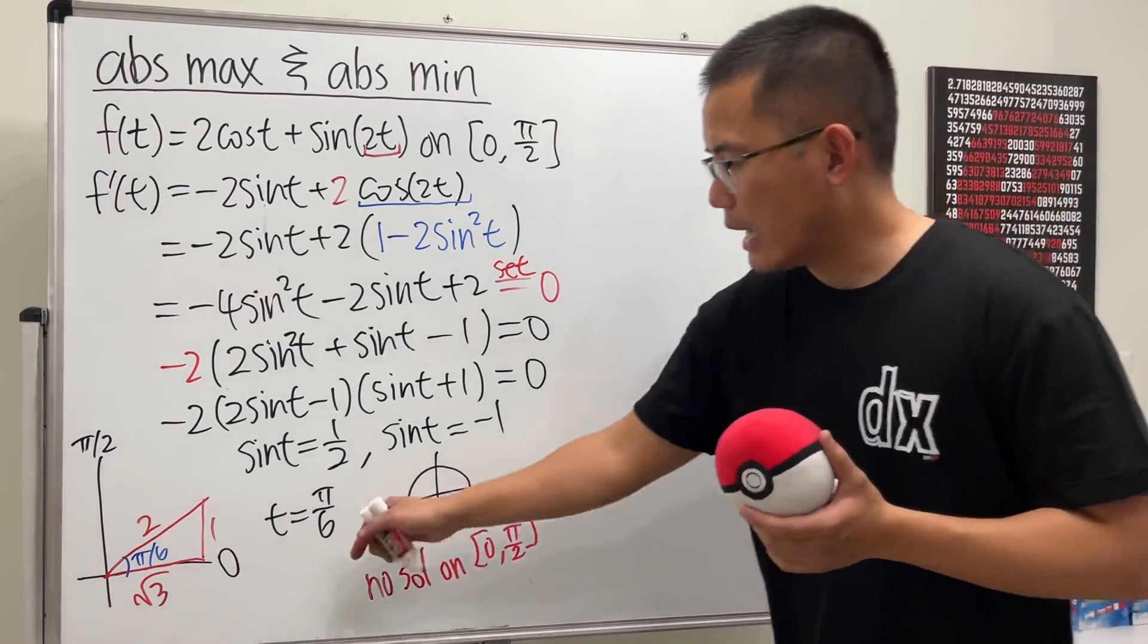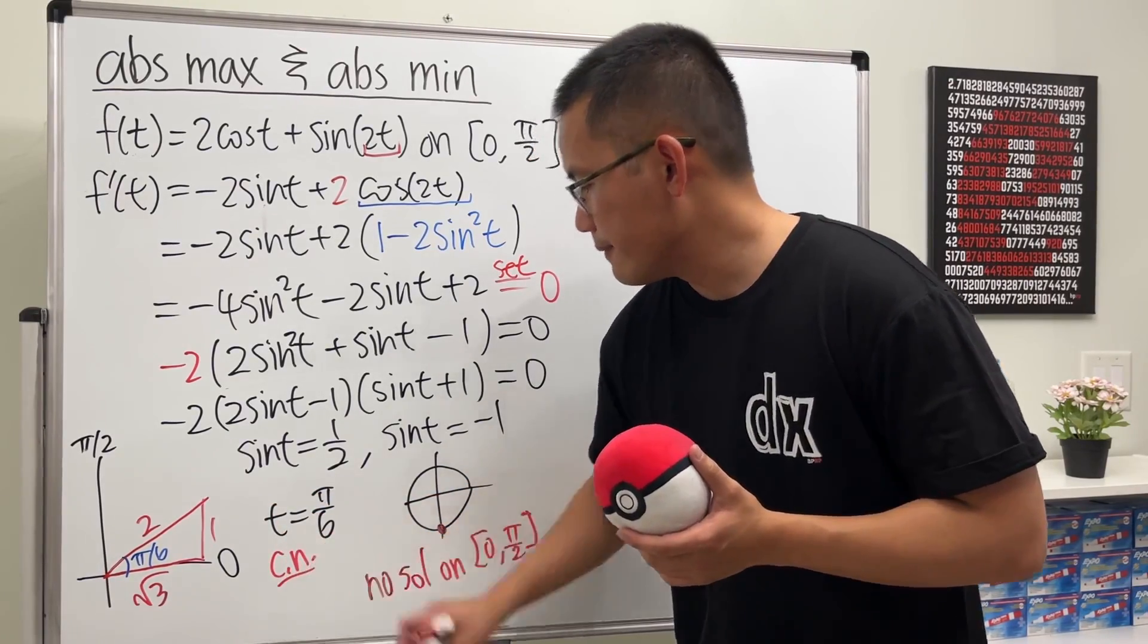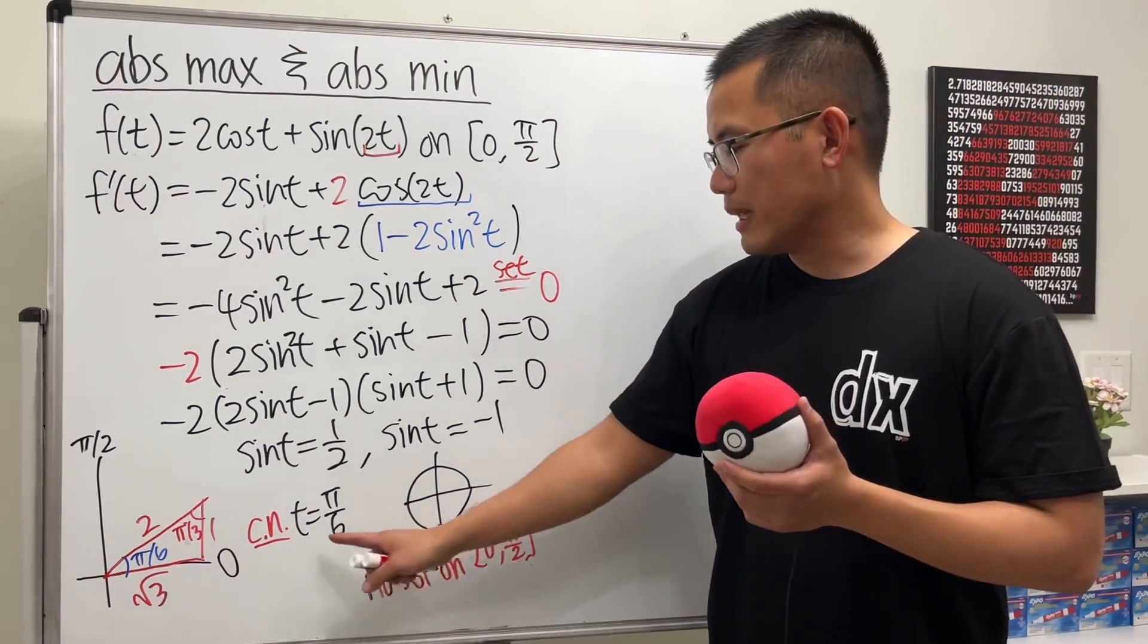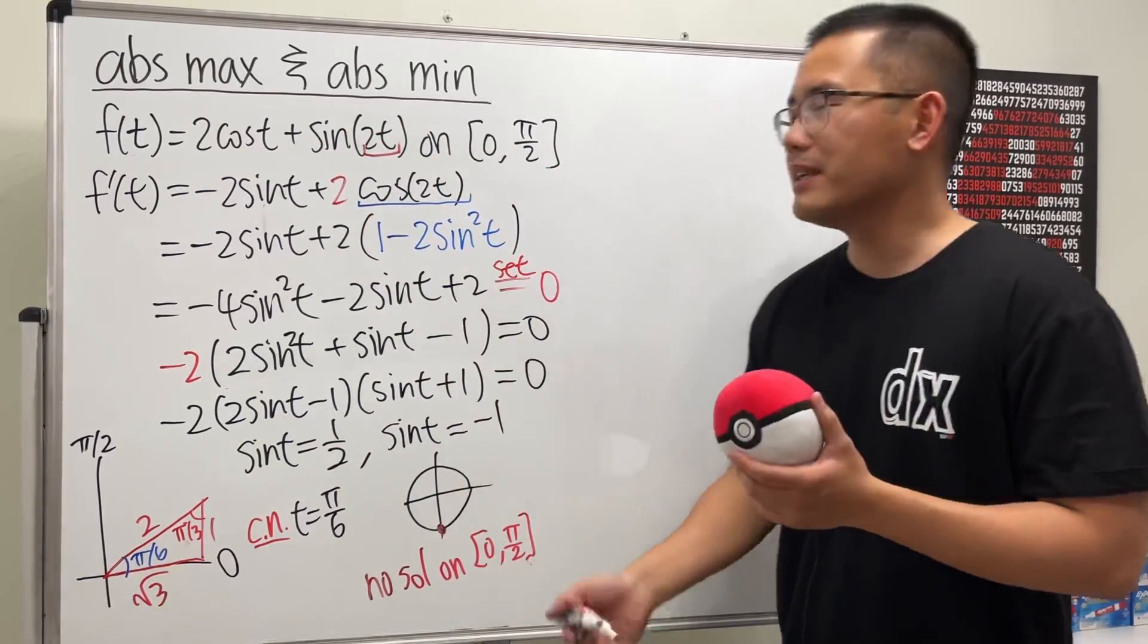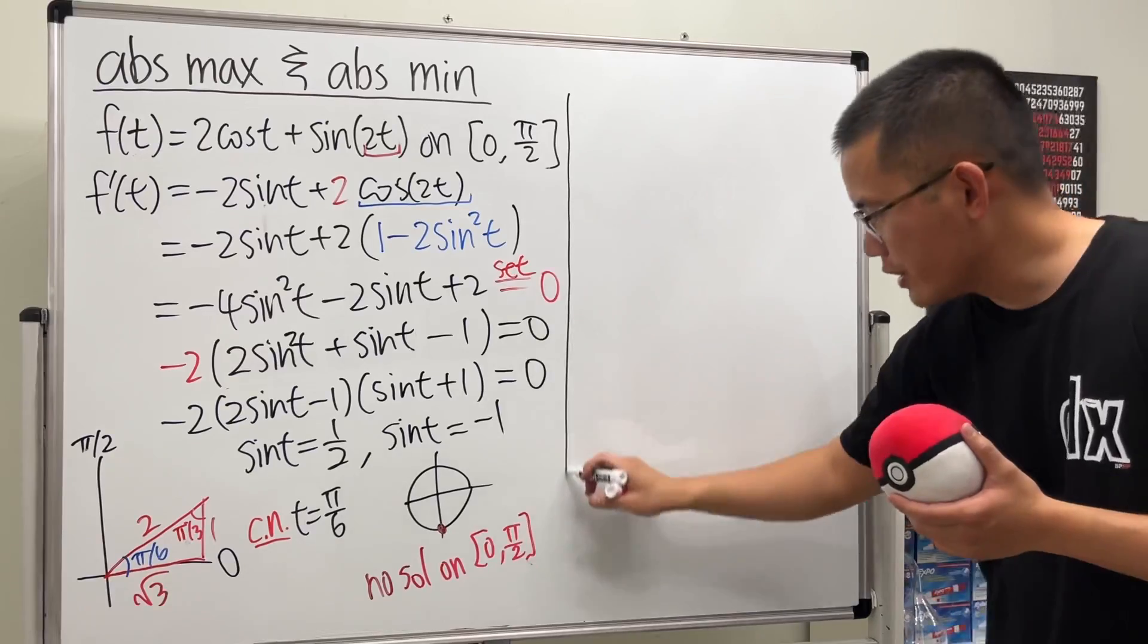So this is our only critical number, cn. Okay, right now, we just have to plug in this, this, and that back to the original function and see which one is the biggest and which one is the smallest. So here we go.